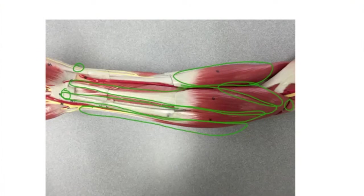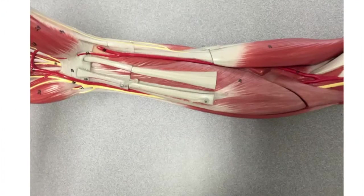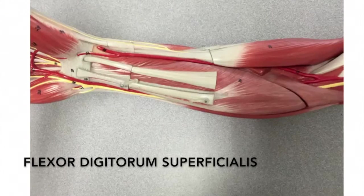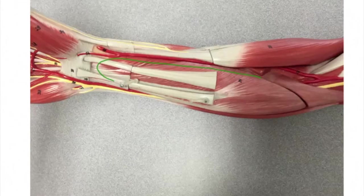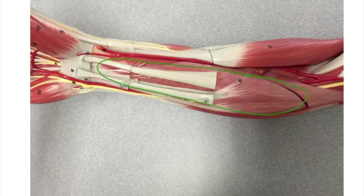We can see how the flexor carpi radialis, flexor carpi ulnaris, palmaris longus, and the pronator teres all originate from the medial epicondyle of the humerus. In the next model, we have removed the flexor carpi radialis, palmaris longus, and the pronator teres to expose the flexor digitorum superficialis. Its origin is the humerus, ulna, and radius. The insertion is the middle phalanges of digits 2 to 5, and the action is to flex the middle and proximal phalanges of digits 2 through 5.